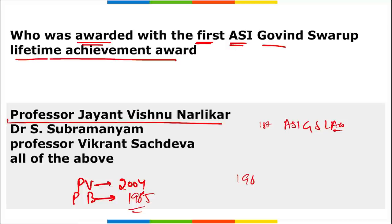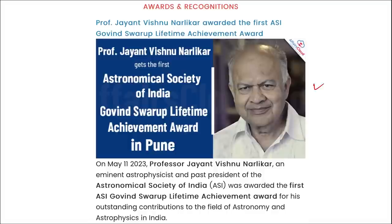The ASI Govind Swaroop Lifetime Achievement Award is for astronomy and physics, instituted by the Astronomical Society of India. This award is given to senior scientists for their eminence once every two years. It includes a citation, a plaque, and a cash prize of ₹1,50,000.